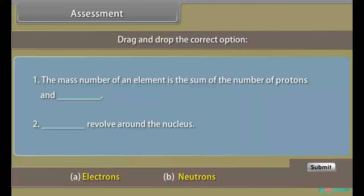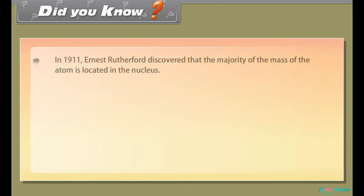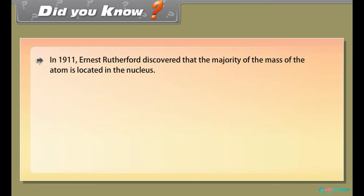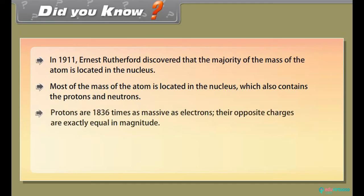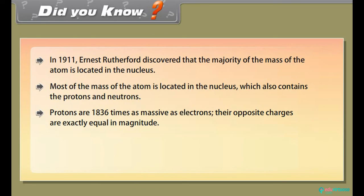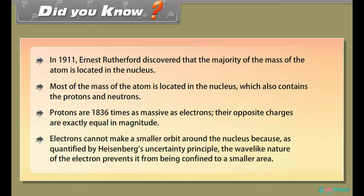Assessment: Before proceeding further, let us know how much you have learned. Drag and drop the correct option. Did you know — in 1911, Ernest Rutherford discovered that the majority of the mass of the atom is located in the nucleus. Most of the mass of the atom is in the nucleus, which also contains protons and neutrons. Protons are 1836 times as massive as electrons, and their opposite charges are exactly equal in magnitude. Electrons cannot make a smaller orbit around the nucleus because, as quantified by Heisenberg's uncertainty principle, the wave-like nature of the electron prevents it from being confined to a smaller area.